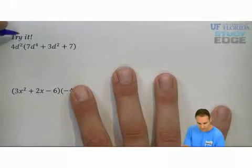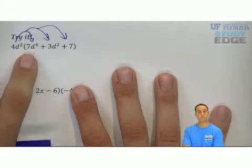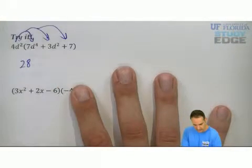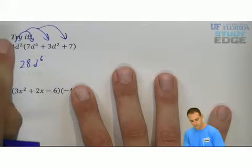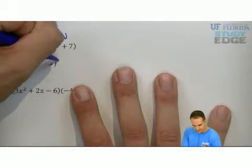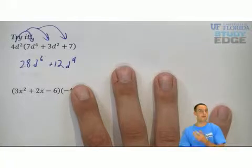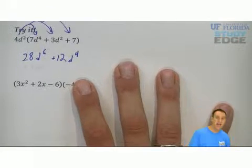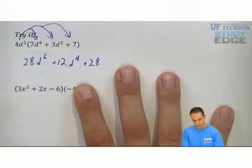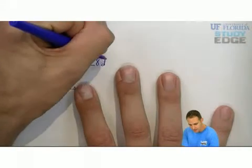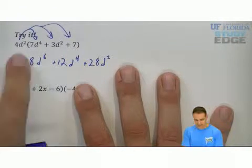Here we're going to multiply 4d squared to each term. 4 times 7 is 28, and 2 plus 4 gives you d to the sixth. 4 times 3 is positive 12, and 2 plus 2 gives you 4. Multiply the coefficients, add the exponents. 4 times 7 is 28, and in this case it's just multiplied by d squared — nothing else to combine on that last term, just write it down.